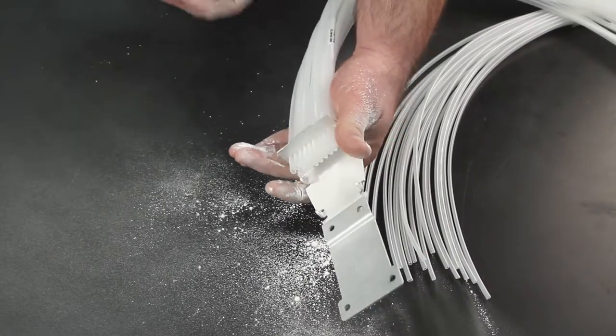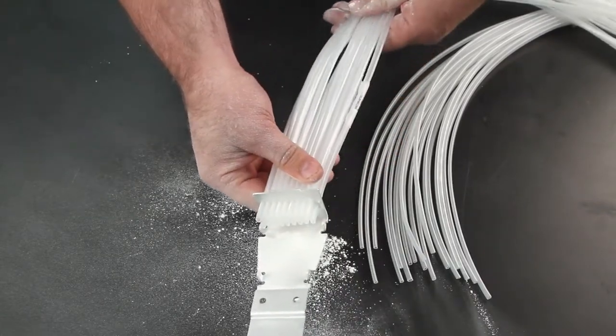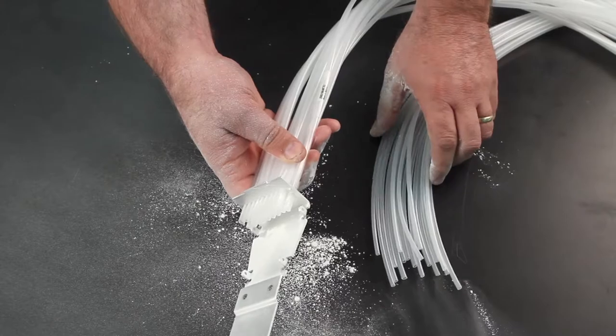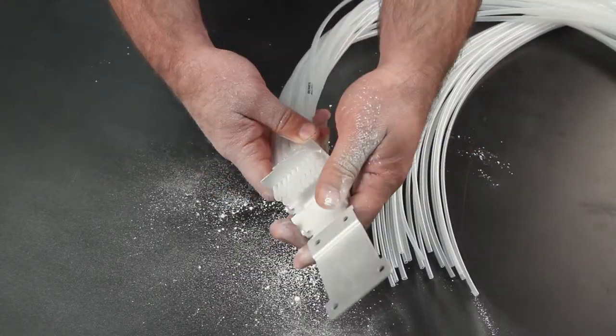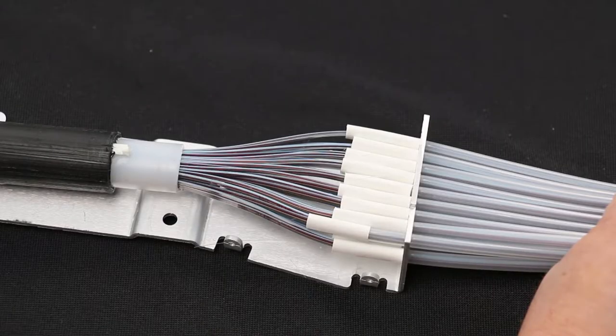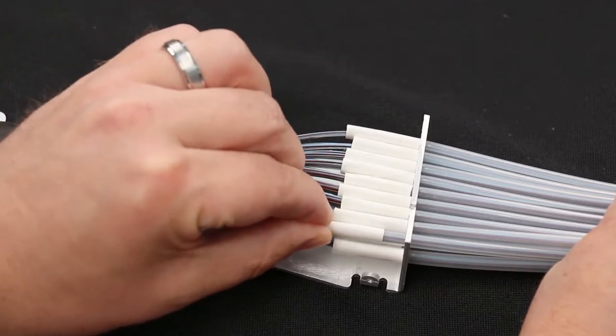After blowing the powder through the tube, check the tubing to ensure there is no clumping of the powder inside the tubes prior to moving to the next step. Slide the 3-16 inch heat shrink over the ends of the clear oval tubes.